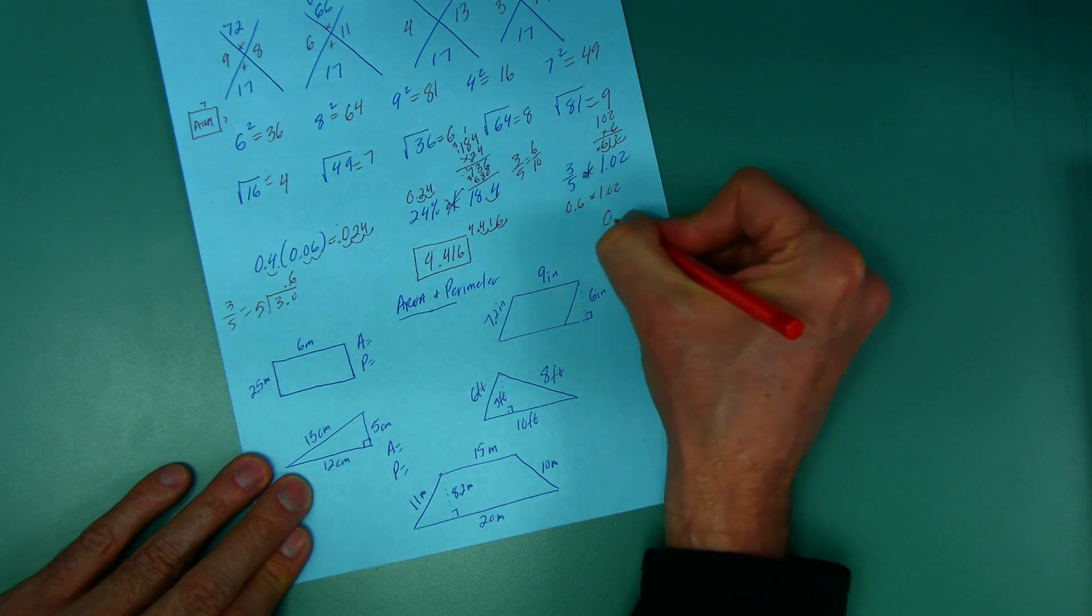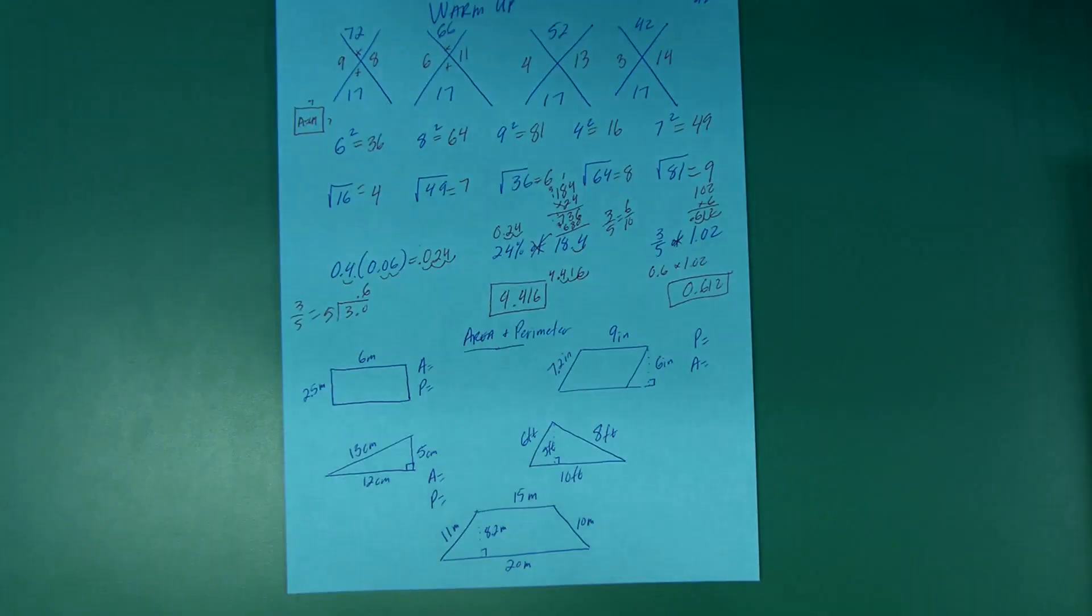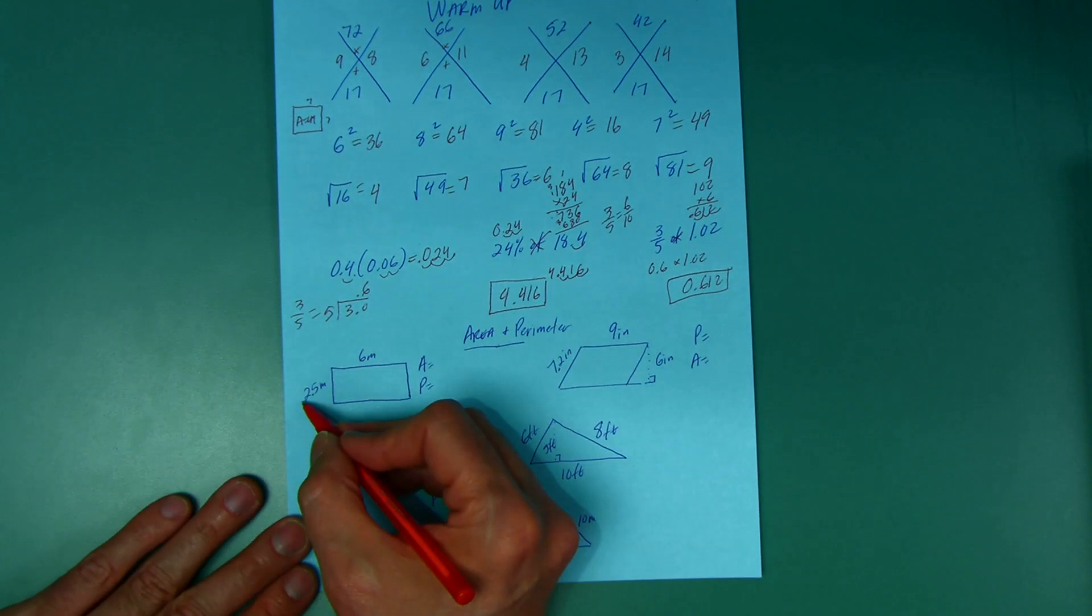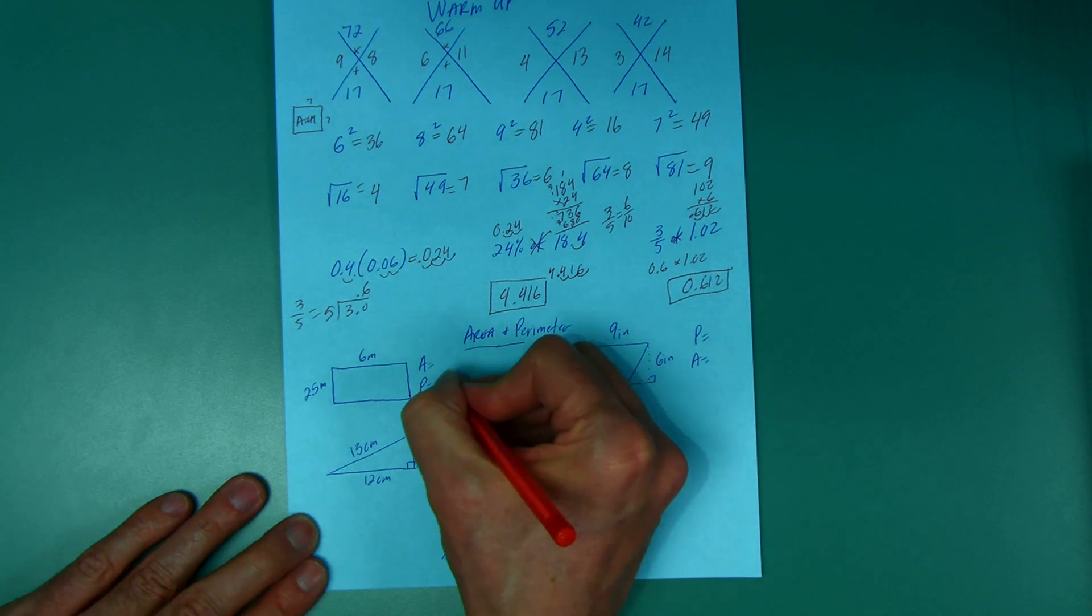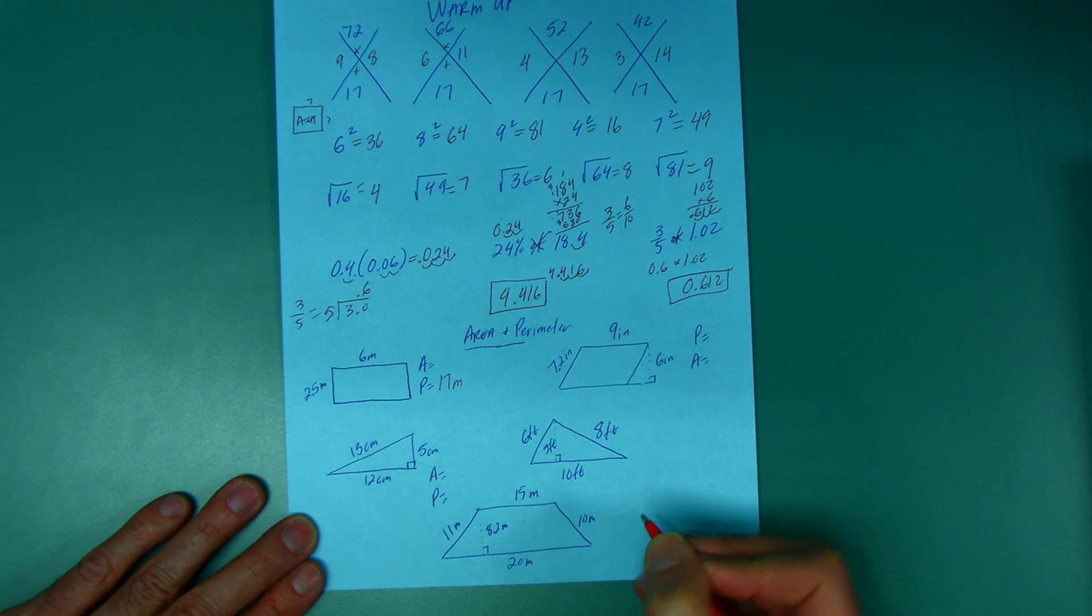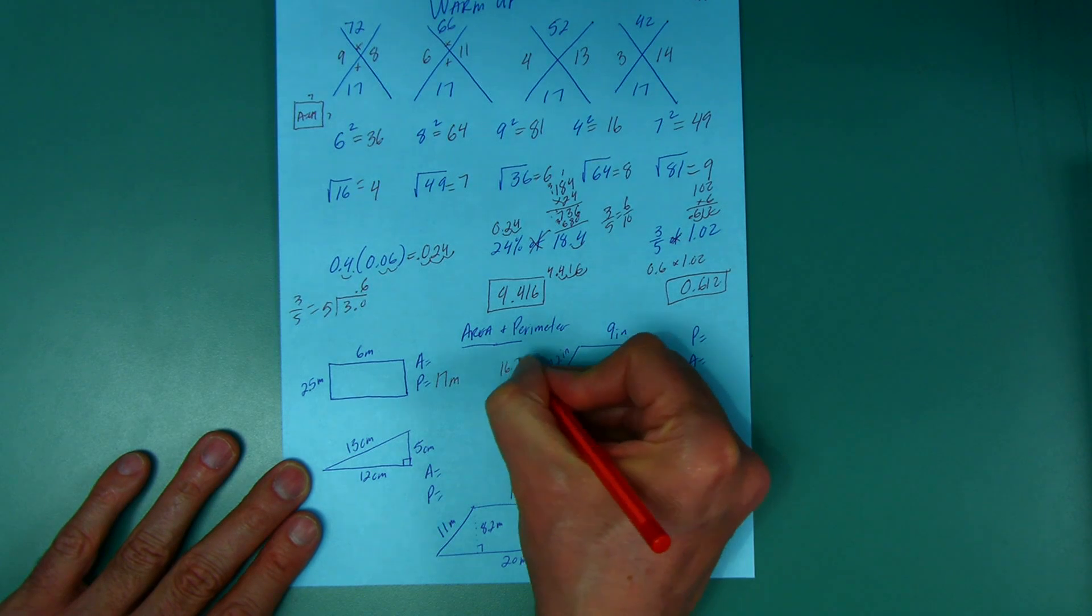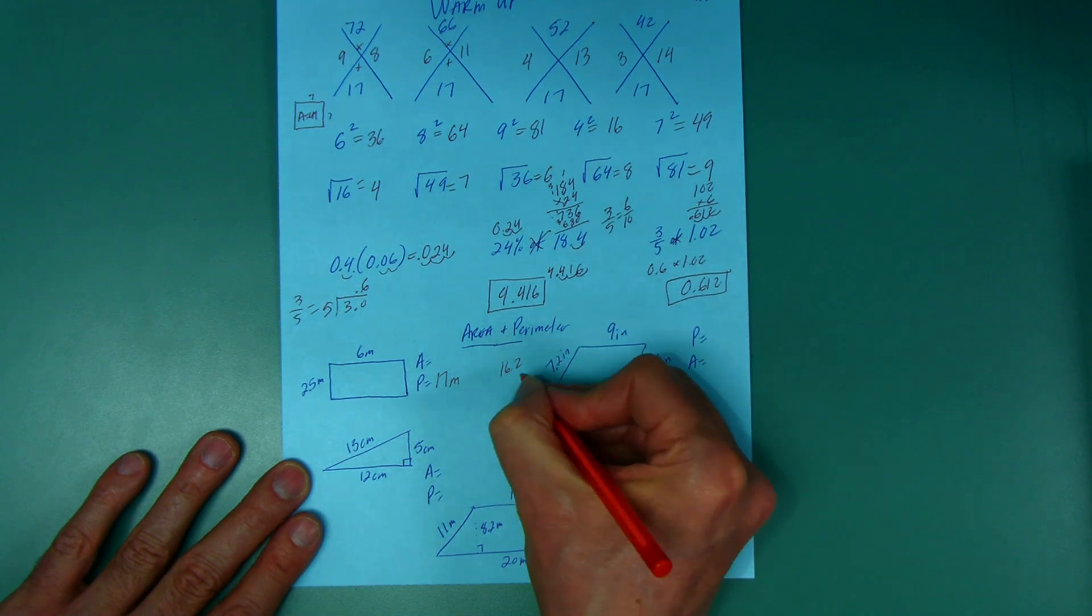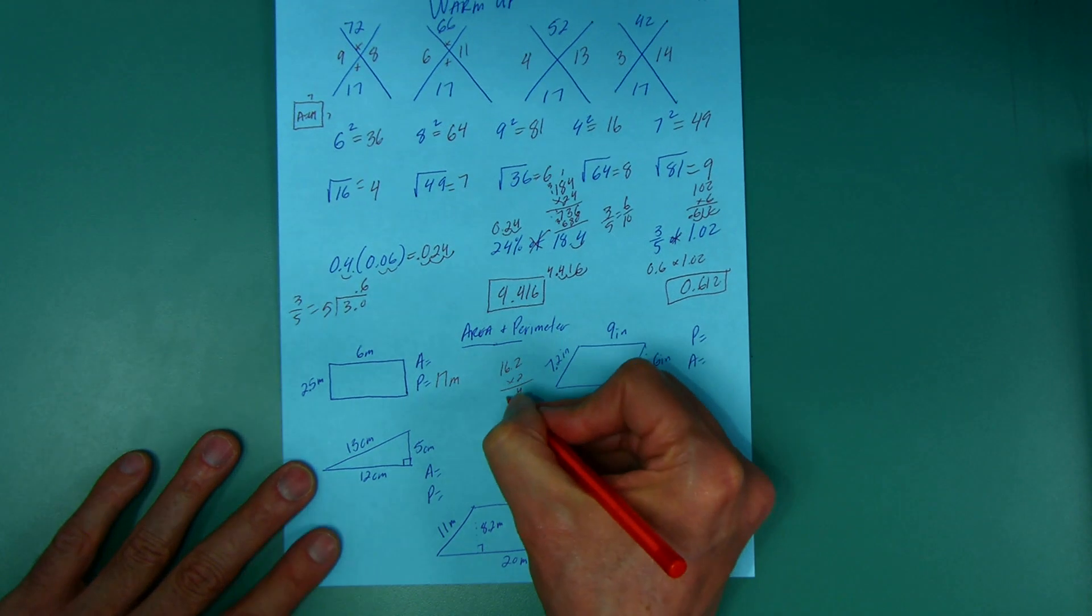All right, the perimeter is 6 plus 8 plus 2.5 is 8.5. When I double that, 8 and a half doubled is 17, and that's meters. The perimeter: 9 plus 7.2 is 16.2, and I double that. I can multiply by 2 or add. 32.4, that's inches.